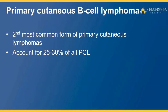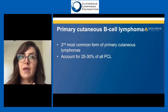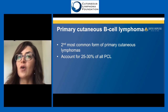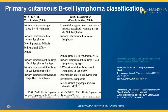Now, primary cutaneous B cell lymphomas are the second most common form of primary cutaneous lymphomas and account for about 30% of all primary skin lymphomas. The World Health Organization divides them into subtypes, and there are different classifications. For the purpose of this talk, we're going to use the main categories on the left side.